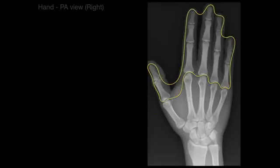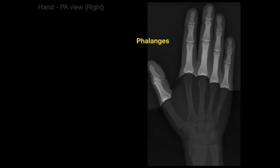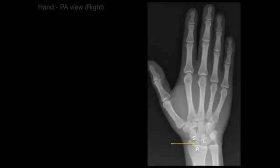Next we have these bones, the phalanges, numbered one for thumb, two for index finger, three for middle finger, four for ring finger, and five for pinky. On the thumb there is a proximal and a distal phalange. Then you have a proximal, middle, and distal phalange in digits two through five.